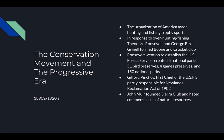Moving into the conservation movement and the progressive era, American society shifted with urbanization during the Industrial Revolution. Hunting and fishing were no longer for necessity and became very popular as trophy sports. This led to the near extinction of many species. In response to this overhunting and fishing, Theodore Roosevelt and George Byrd Grinnell formed the Boone and Crockett Club in 1887, which consisted of conservationists, scientists, politicians, and intellectuals who focused on solving the problems of overfishing and resource management.